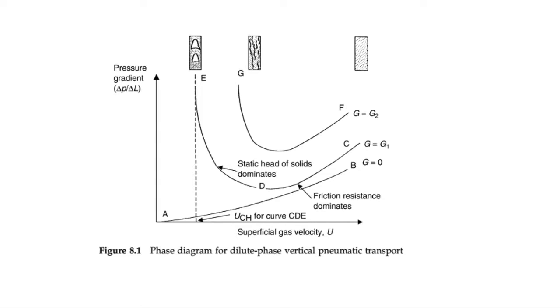Between D and E, the concentration increases to a point that the gas can't hold the solids anymore and slugging begins to occur. Slugging during pneumatic transport is also referred to as choking. The choking velocity, UCH, is the lowest velocity particles can be transported. Choking can be reached by increasing concentration or decreasing gas velocity.